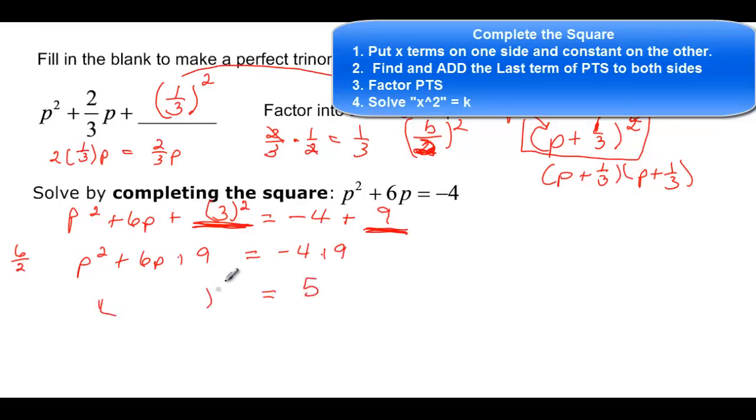And I want to have this binomial squared here. Remember you unsquare the first term, that's p, and unsquare the last term, that's 3. Or half of this middle term will also be what you're going to add. Positive here, so I want a positive here, and now I'm ready to solve.